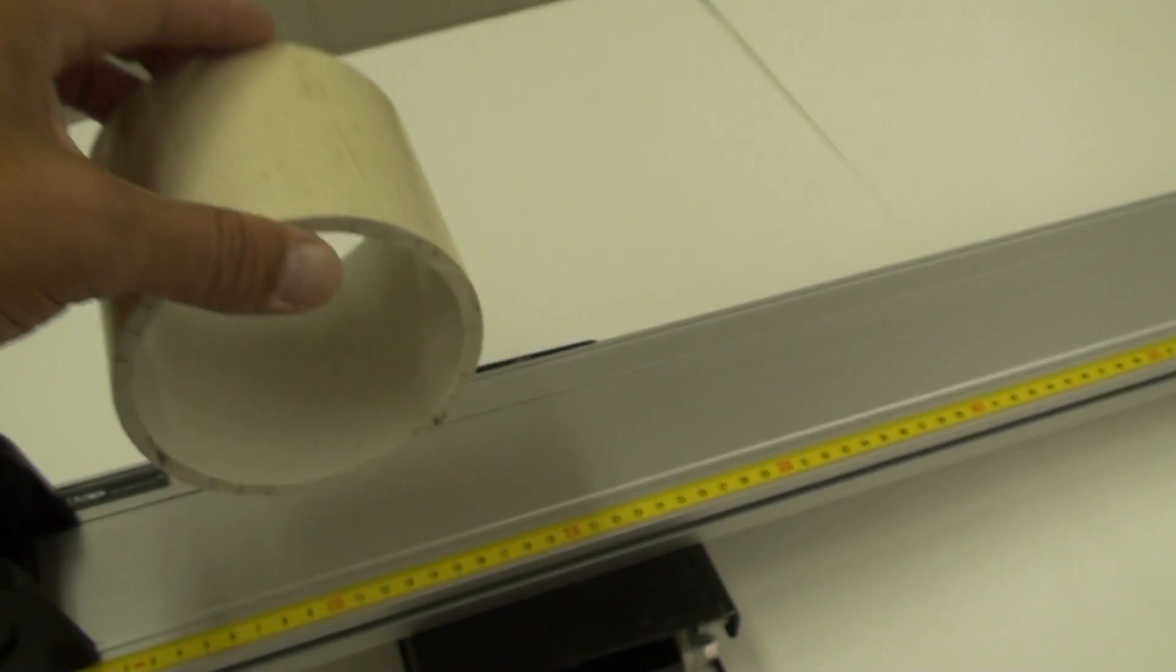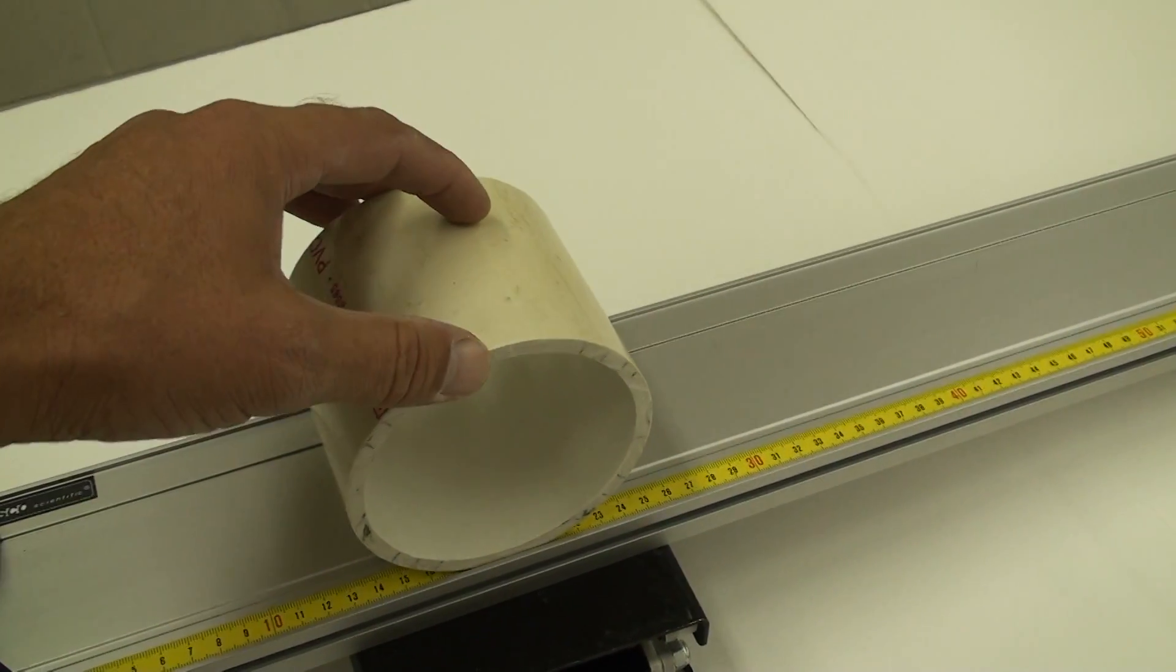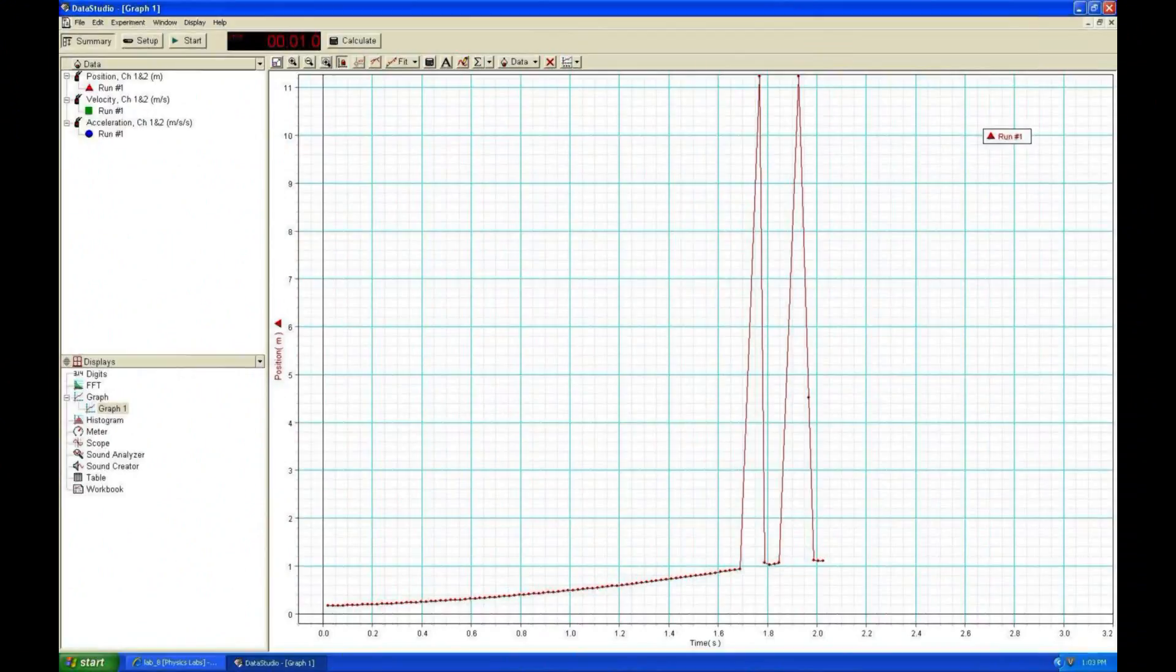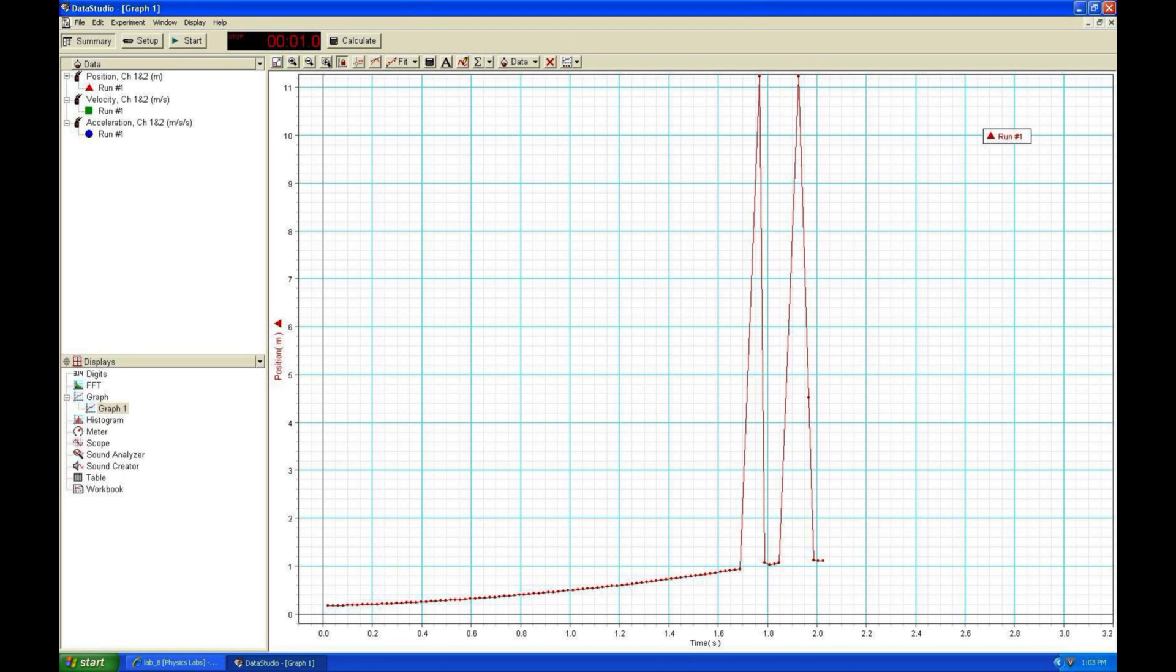Now place the PVC cylinder in the track, carefully aim the motion sensor down the incline, and let the cylinder roll. Here is the position data from the motion sensor. It looks pretty good, until the end when the cylinder ran into the end stop and the motion sensor lost track of it.